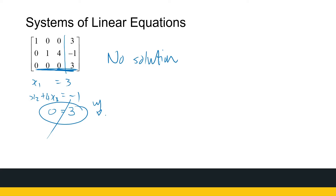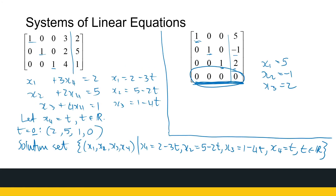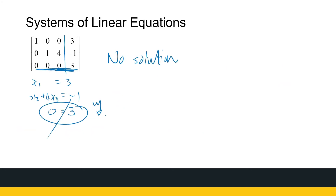So these are the three types of solutions you come up with. Irrespective of the size of your system, using Gauss-Jordan elimination, seeing where you can find leading ones, you can get your solution: either a unique solution, an infinite number of solutions, or no solution, as in this last case.